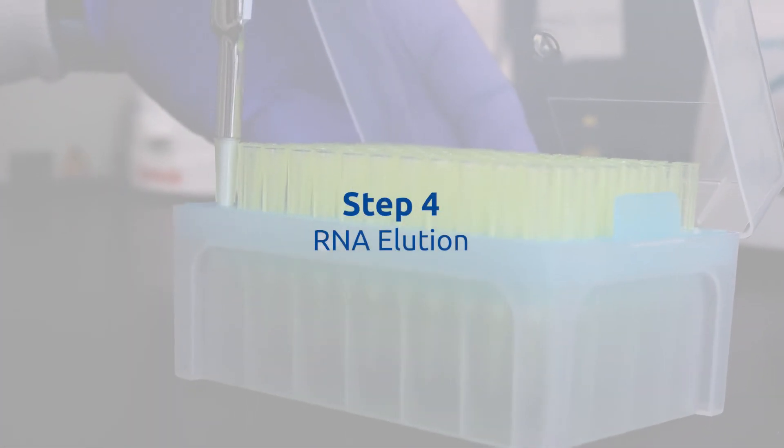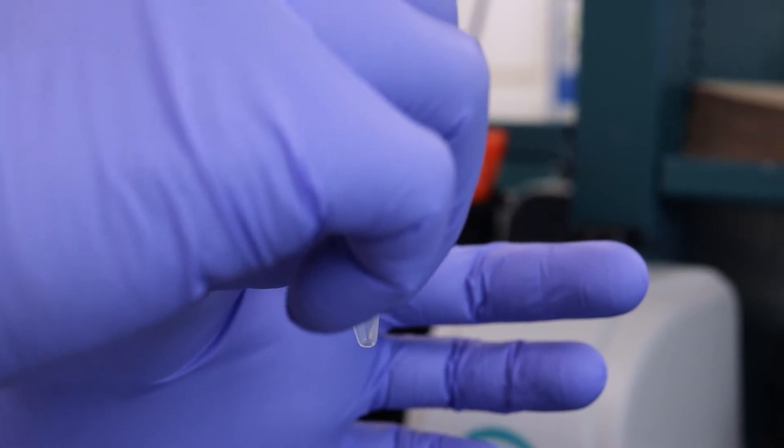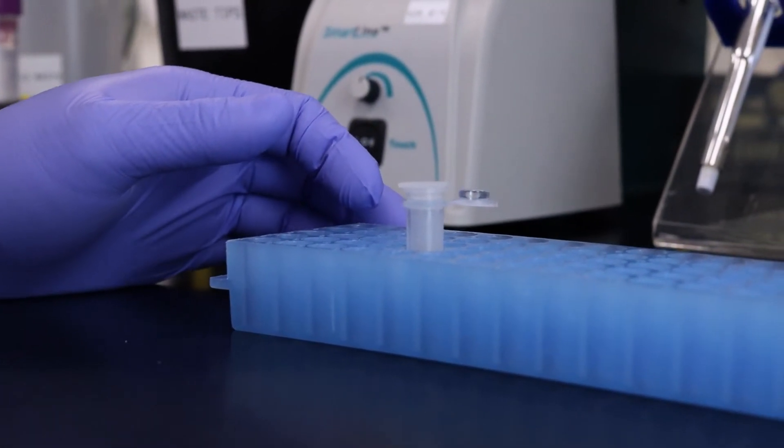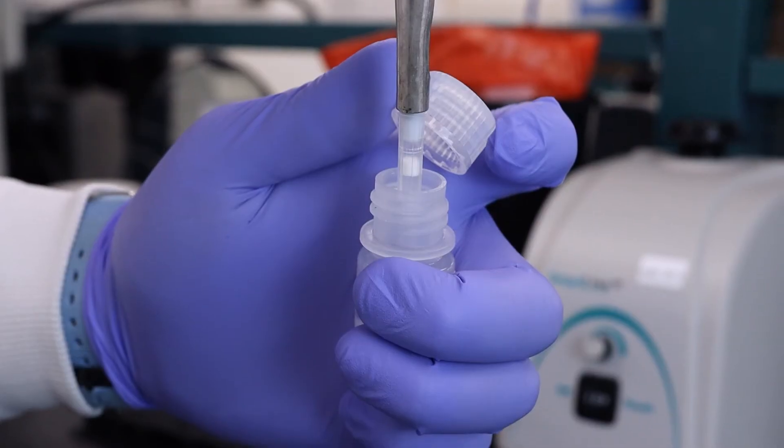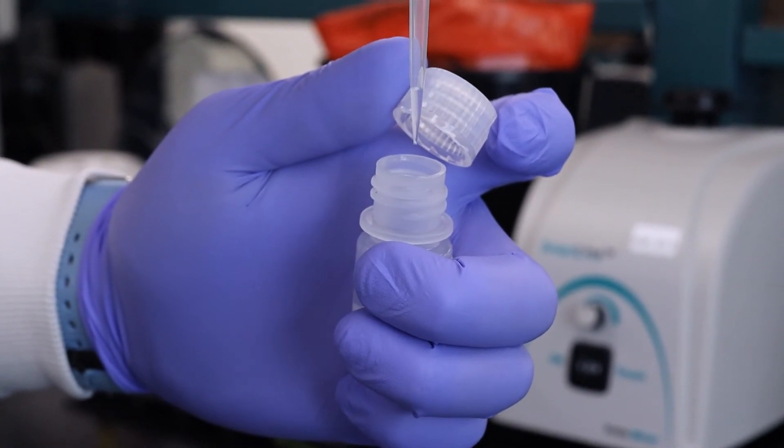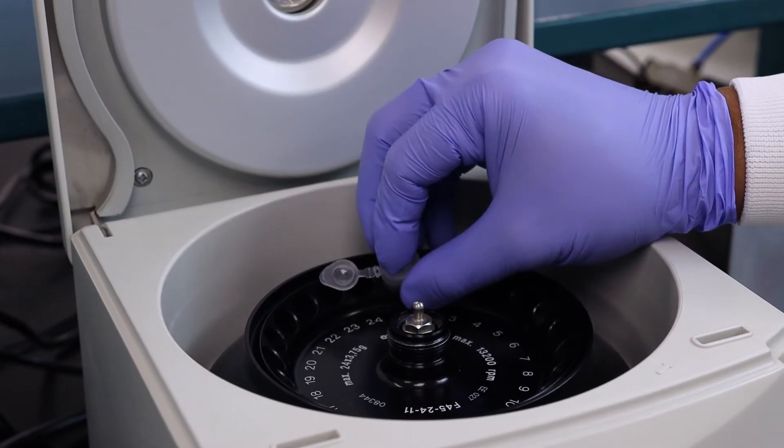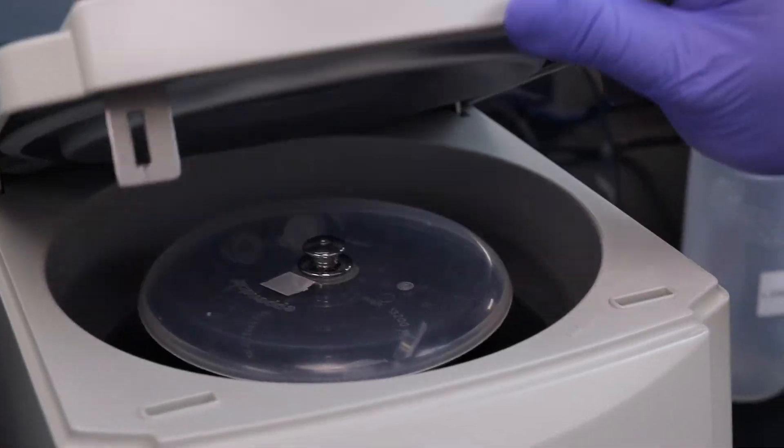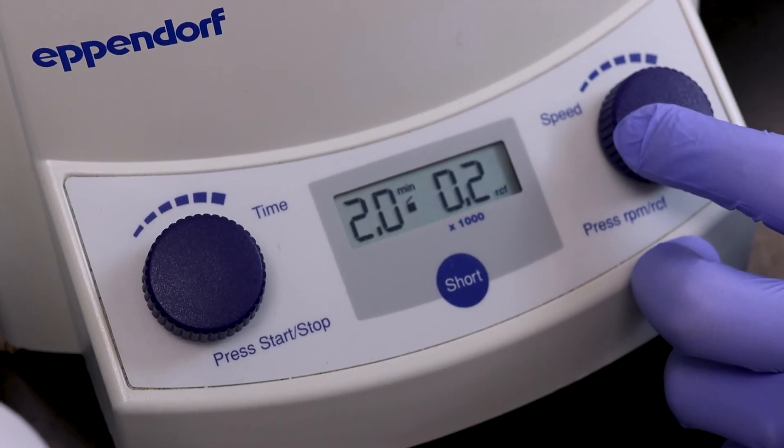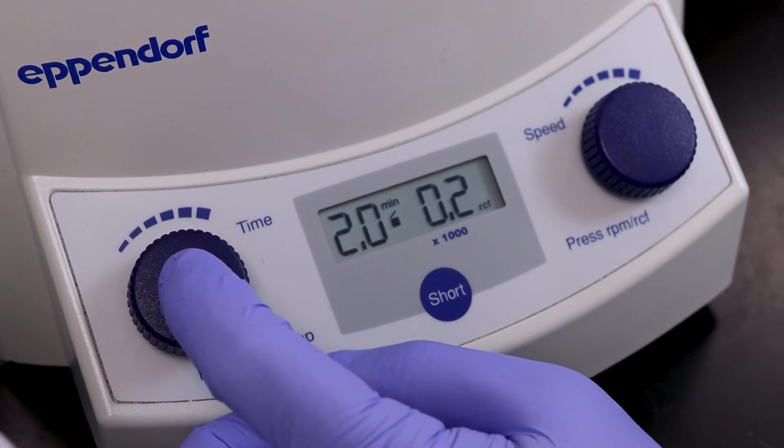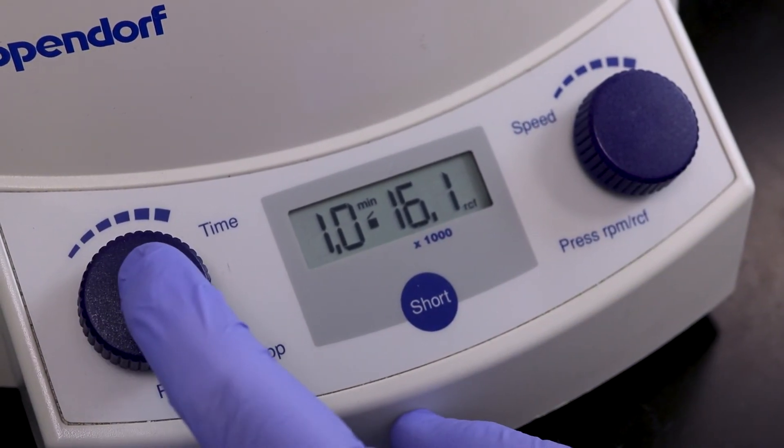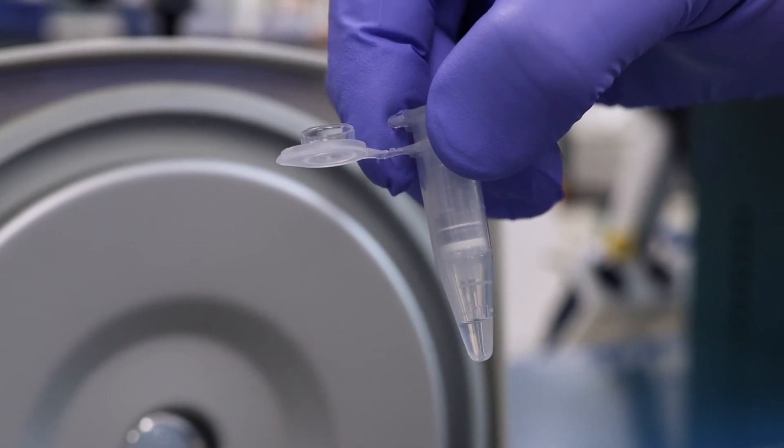Step 4. RNA Elution. Place the column into a fresh 1.7 milliliter elution tube provided with the kit. Add 50 microliters of elution buffer E to the column. Centrifuge for 2 minutes at 200g or 2000rpm, followed by 1 minute at 14000g or 14000rpm.